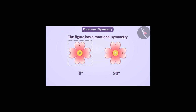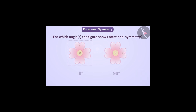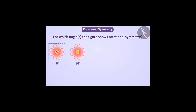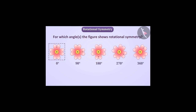Can you tell any angle other than 90 degrees by which, if the figure is rotated, the figure obtained will look exactly in the same state as before? Think for a while. Apart from 90 degrees, if the figure is rotated by 180 degrees, 270 degrees, or 360 degrees, then we see the figure in exactly the same state as before.